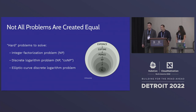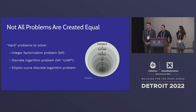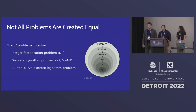In computer science we categorize problems based on complexity, measured by how much time or memory it takes to solve them. Problems used for encryption are at least NP, which means a solution can be verified in polynomial time, but unless P equals NP, finding a solution requires exponential time. If P equals NP, we would need no quantum computer to break encryption. We don't know if P equals NP and believe it is not the case — and so we are here.